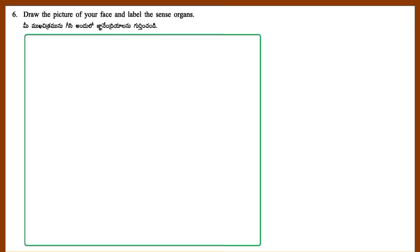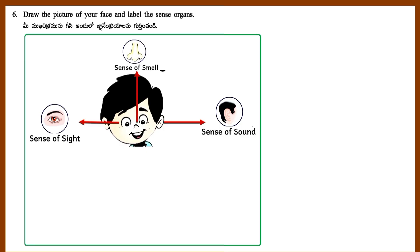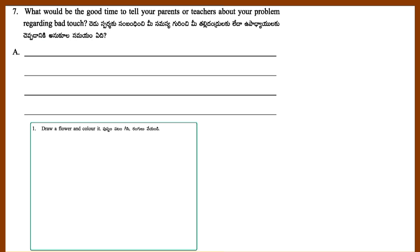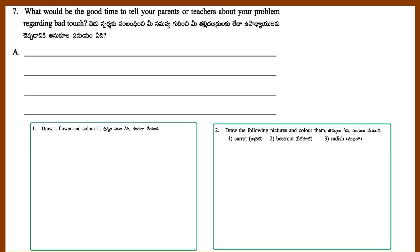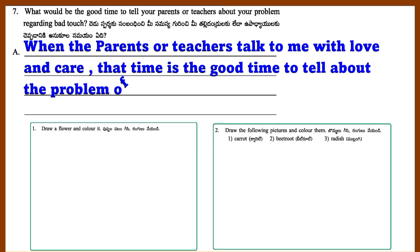Question 6: Draw the picture of your face and label the sense organs. Question 7: What may be the good time to tell your parents or teachers about your problem regarding bad touch? Answer: When parents or teachers talk to me with love and care, that is a good time to tell about the problem of bad touch.